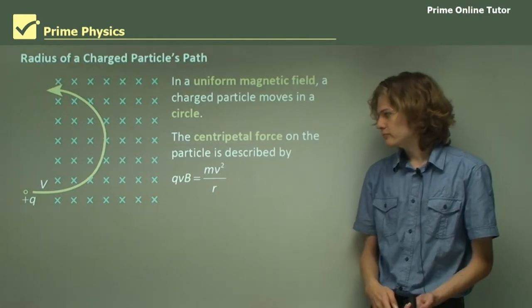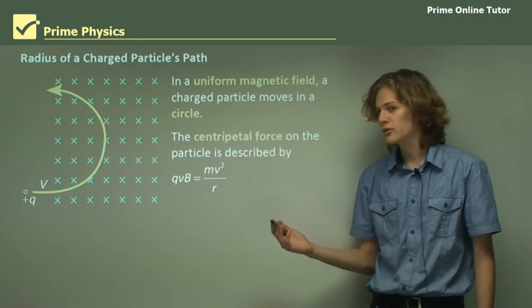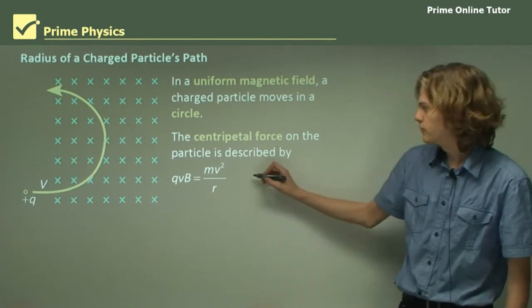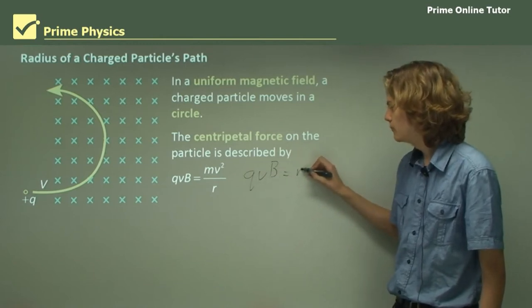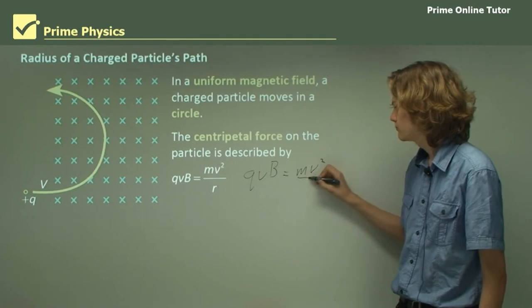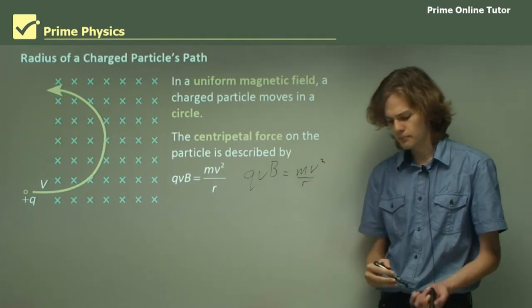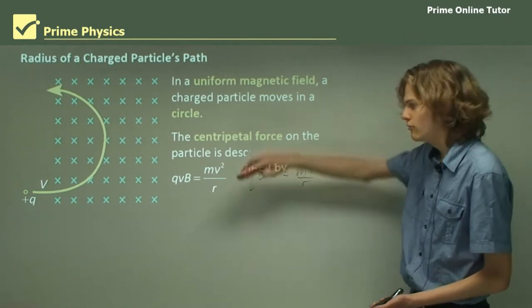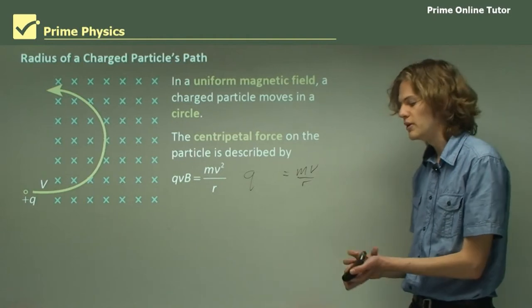From this, we can derive an expression for the charge to mass ratio on the particle. Starting with qVb equals mv squared on r, we can divide both sides by bv, which gets rid of them from this side of the equation and moves the b to the bottom of this one.